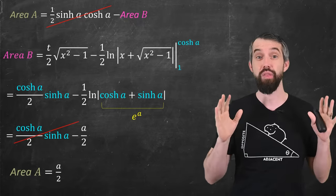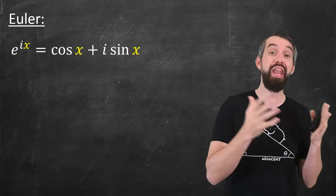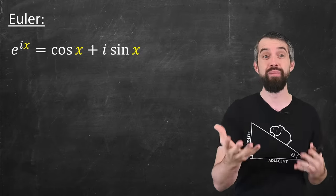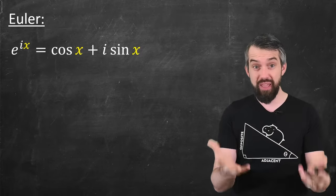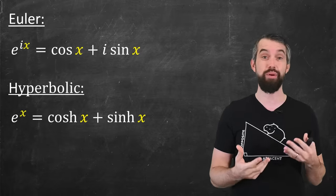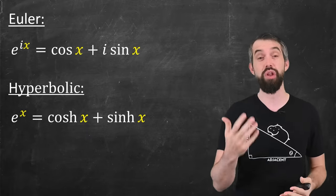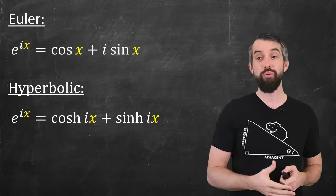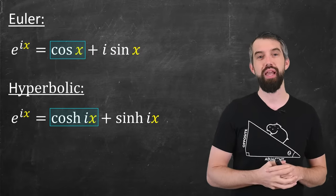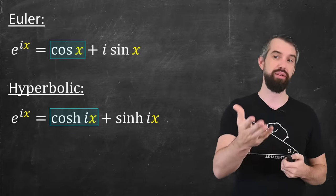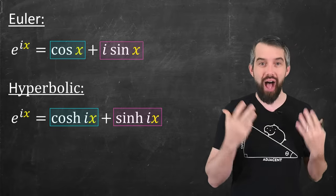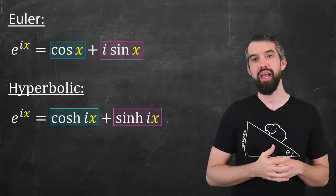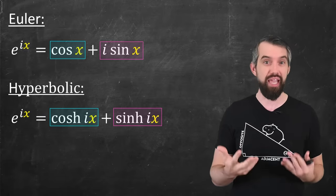I want to scratch the surface on one other aspect: these as complex functions. You might be familiar with Euler's famous identity that e to the ix equals cosine x plus i sine of x. Contrast that with our definition that e to the x equals hyperbolic cosine plus hyperbolic sine. If I plug in i everywhere, I have e to the ix on both sides. Comparing these, cosine is nothing but hyperbolic cosine of i times x, and sine of x is hyperbolic sine of i times x divided by i. So cosine and hyperbolic cosine, sine and hyperbolic sine, can be thought of as different sides of the same larger coin.